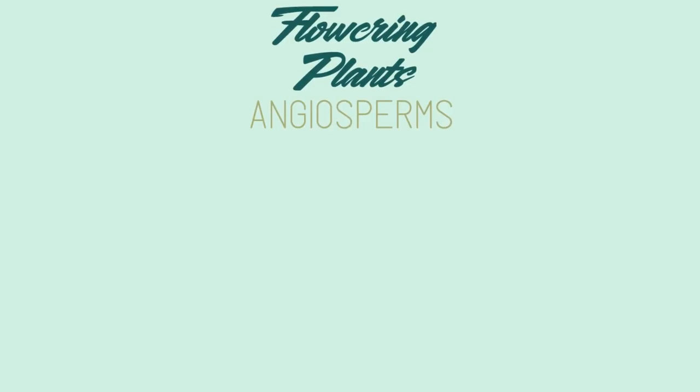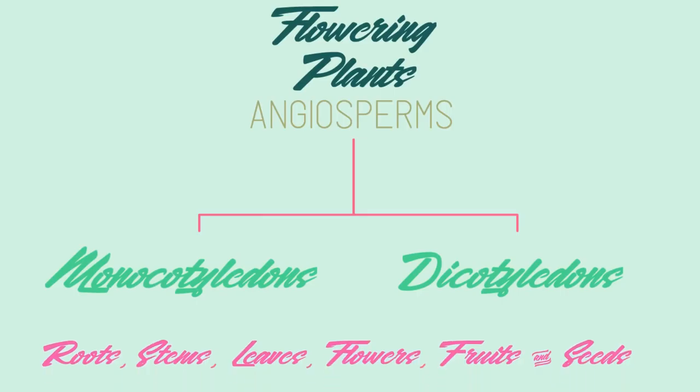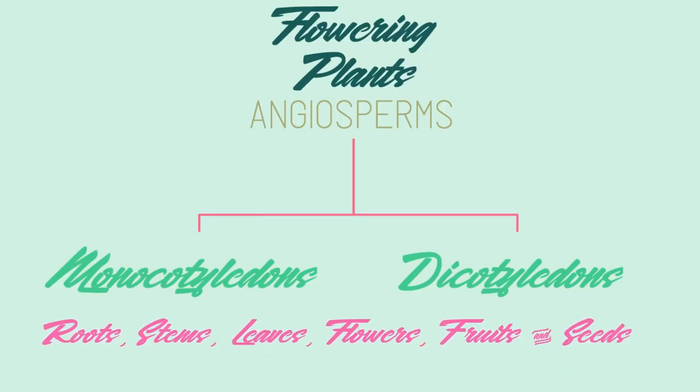Now for angiosperms — the largest and most diverse group in the plant kingdom. Angiosperms consist of two major groups: monocotyledons and dicotyledons. These groups differ with respect to their roots, stems, leaves, flowers, fruits, and seeds.